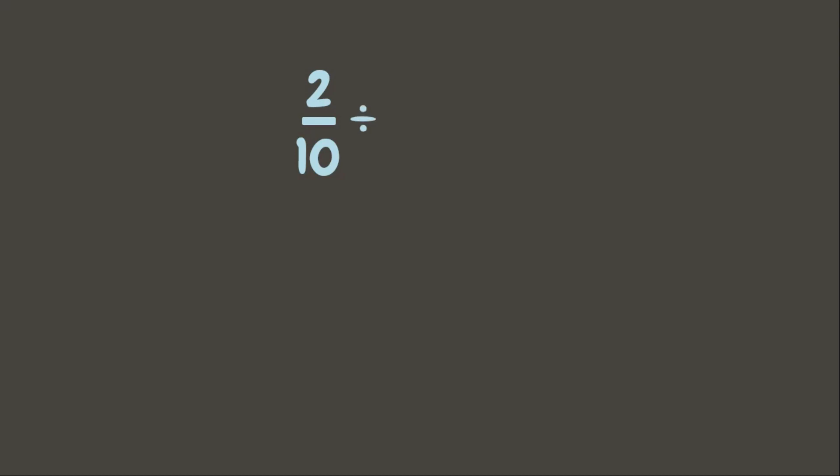Let's have another example. We have here two-tenths. Let us first get the GCF of the numerator two and the denominator ten. The GCF of two and ten is two. Two divided by two is one. Ten divided by two is five. Therefore, the lowest term of two-tenths is one-fifth.